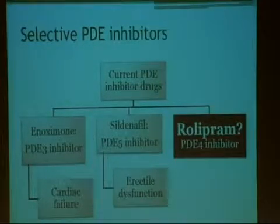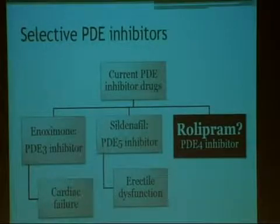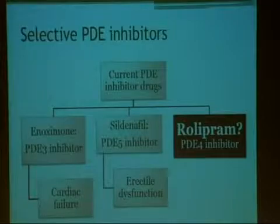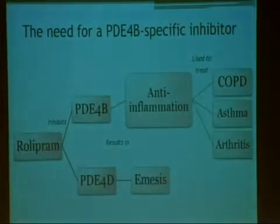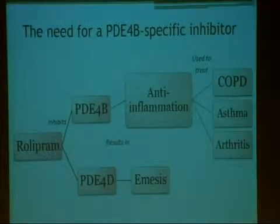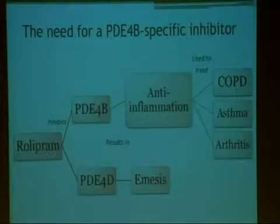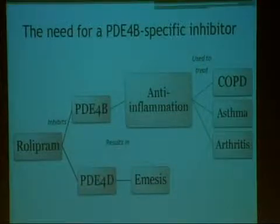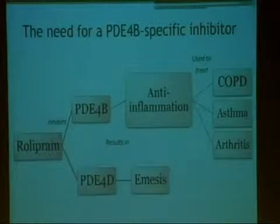Last but not least, you have Rolipram, which researchers have previously tried to use to treat depression as well as autoimmune diseases. However, there is one big problem with Rolipram: it's just not selective enough. It inhibits both PDE4B, which causes the anti-inflammatory effect, but also 4D, which just causes people to vomit. So ideally, we'd want to have a PDE4B-specific inhibitor so as to minimize the emetic effect.